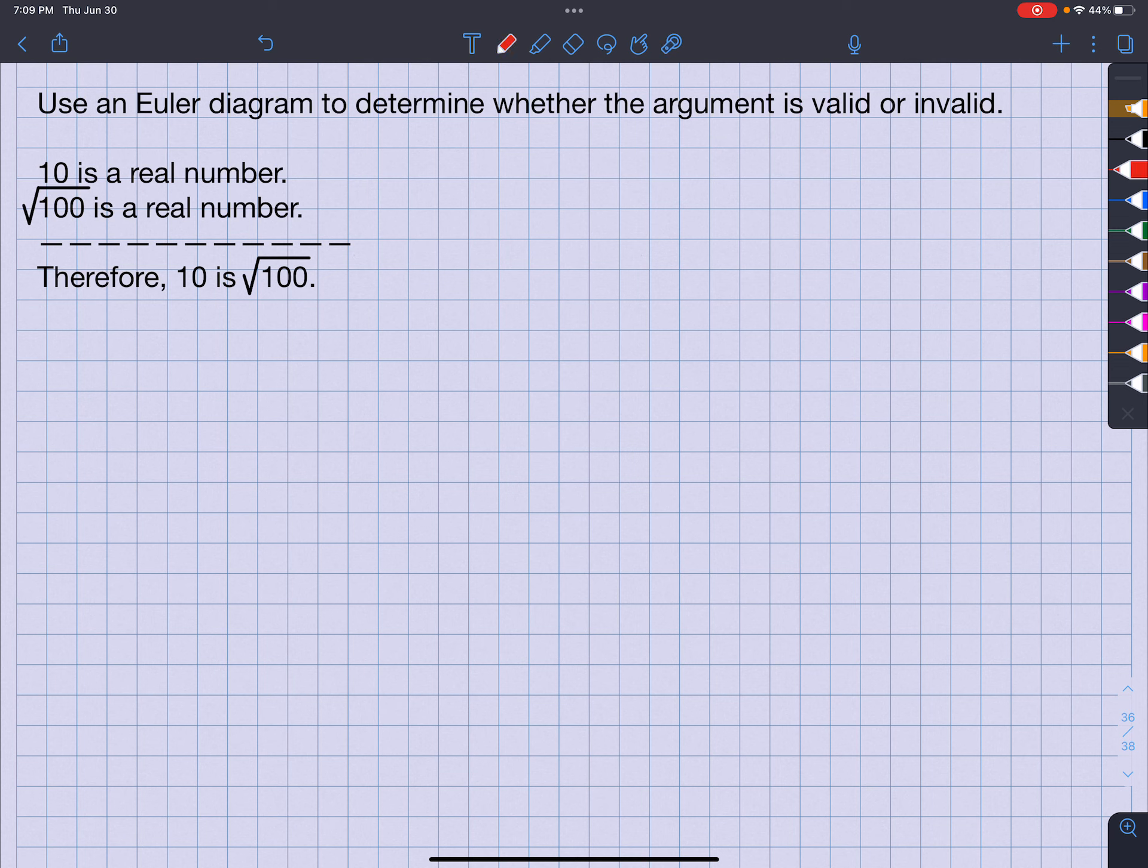All right, the first premise says 10 is a real number. This is real number. There's my 10. All right, 10 is a real number.